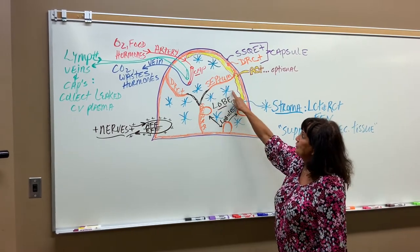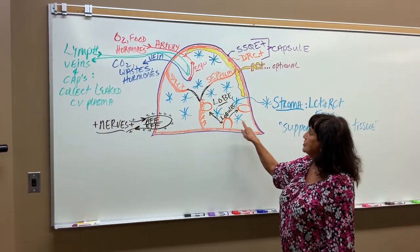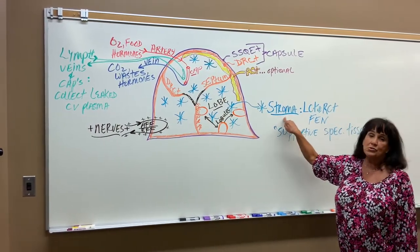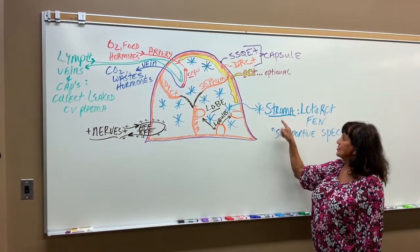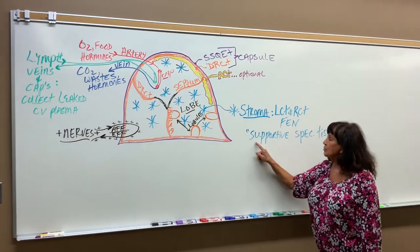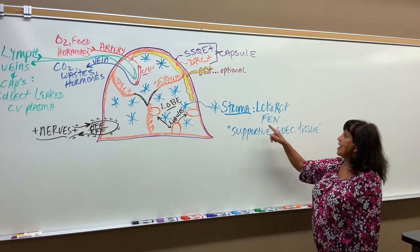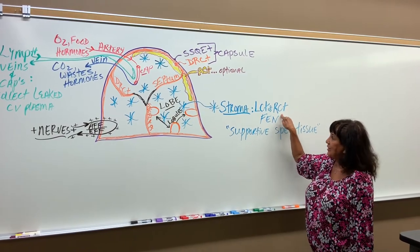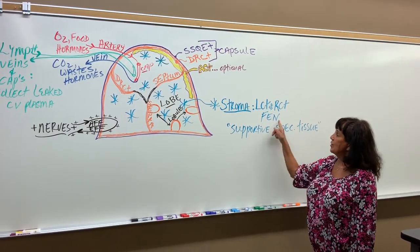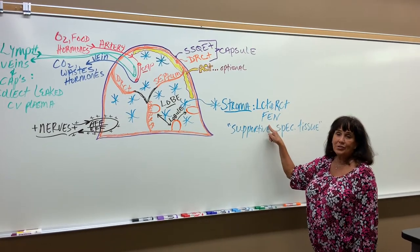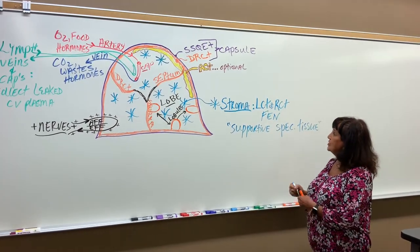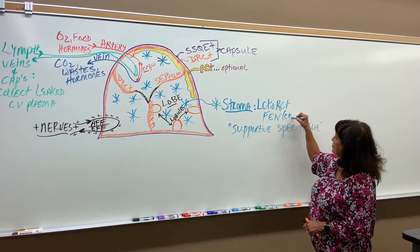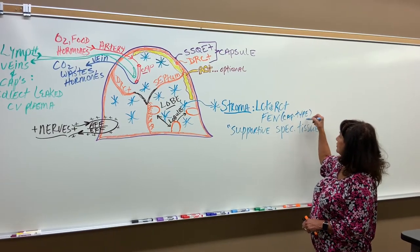We have blue CT right here — the blue stars on the inside — and this blue CT is called the stroma. The stroma is the supportive specific tissue, and it's either going to be loose CT or RCT in your lymph nodes only. Fenestrated — FEN — stands for the type of capillary that's going to be present in the loose CT or the RCT. This is the capillary type.